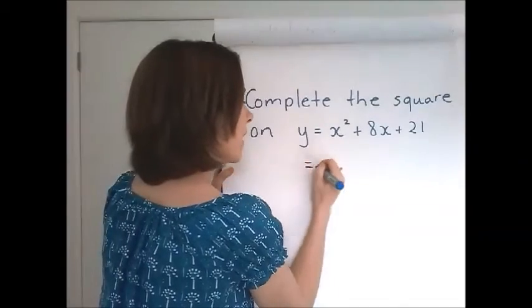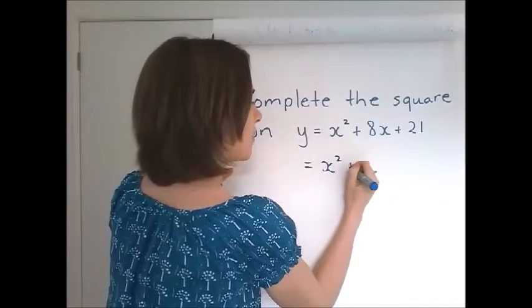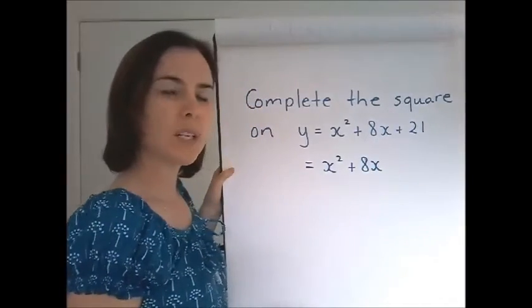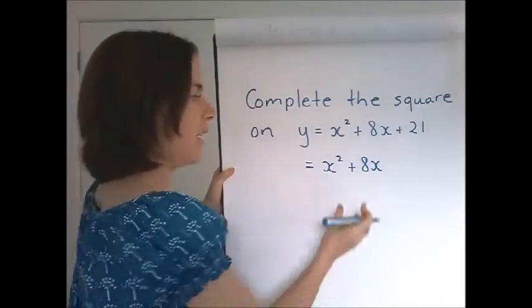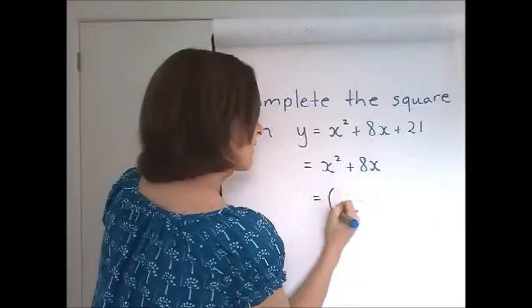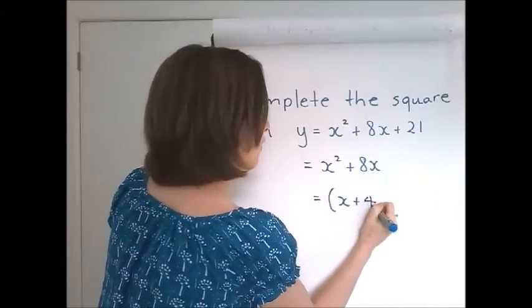Complete the square on y equals x squared plus 8x plus 21. I would begin by copying down the first two terms. And then we need to create a perfect square that would start with that as its expansion. So half the 8 and you get x plus 4.